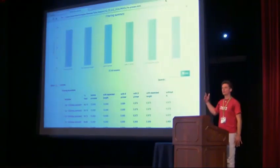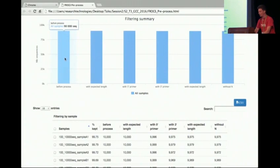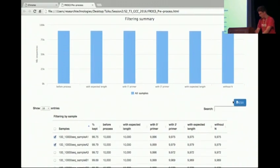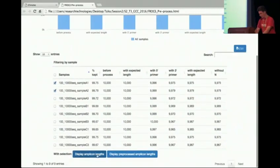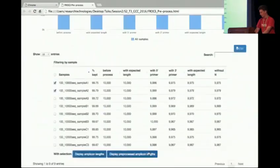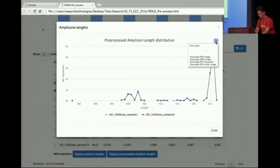So for example, you have this kind of report generated by FROGS. This is something quite interesting and beautiful for biologists. You can see the samples you have before processing, after processing, and after applying different filtering steps. You can export in CSV, and you can select some samples. You can also display amplicon lengths before and after preprocessing, and you can choose to download the charts in the format you want.